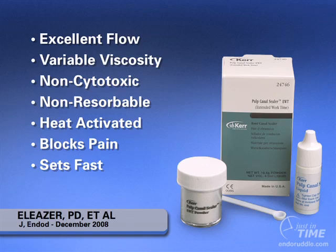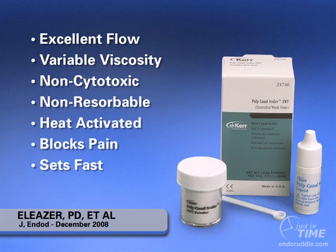I'd like to use a heat-activated sealer. In the warm gutta percha technique we're using a heat source, and this heat will drive the reaction so you have an even faster set — this is desirable. We want to use sealers that block pain, and this is the only one I'm aware of that does. When you mix eugenol with zinc oxide, you form zinc eugenates. Zinc eugenates block prostaglandins, which are implicated in pain mediation by causing mast cells to lyse, releasing histamine. We can block this entire pathway by just using the correct sealer.